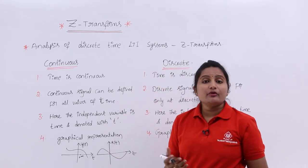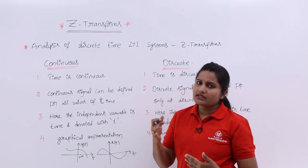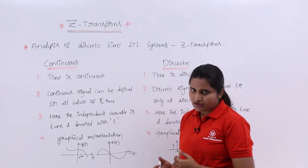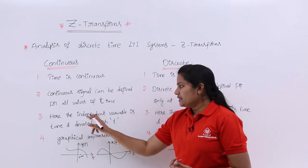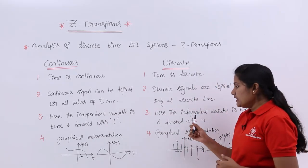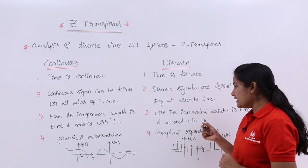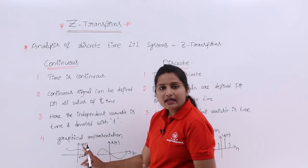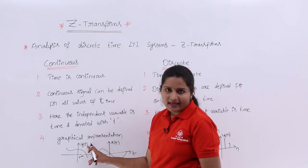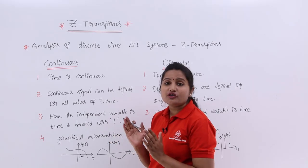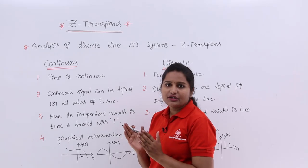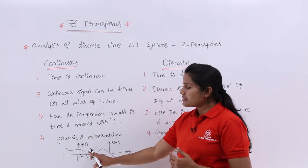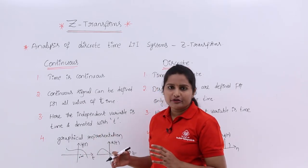Coming to the third point — the independent variable is time in both continuous and discrete time signals. But in continuous time you represent that independent variable as t. The independent variable is time indicated with t. The graphical representation of a continuous time signal shows we take a function of t. For example, y of t — y refers to the name of the signal and y of t shows it is a function of continuous time t. On the x-axis you consider the time period, and on the y-axis you note all amplitudes of the signal. As this is a continuous signal you have all amplitudes at all points of t.